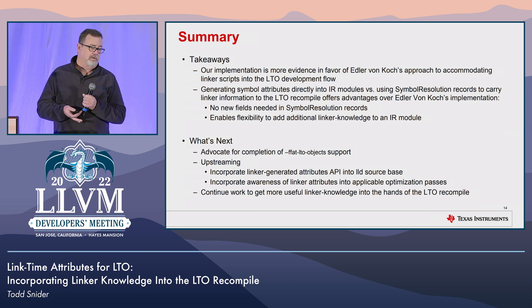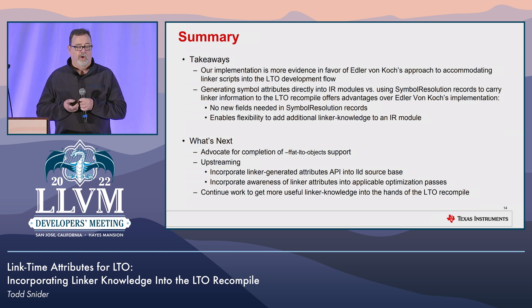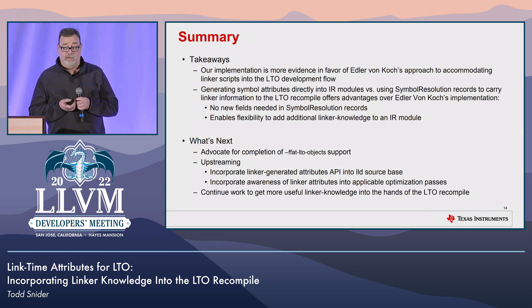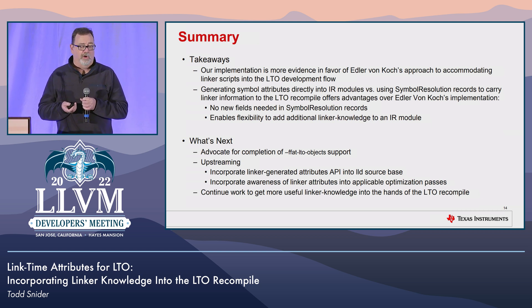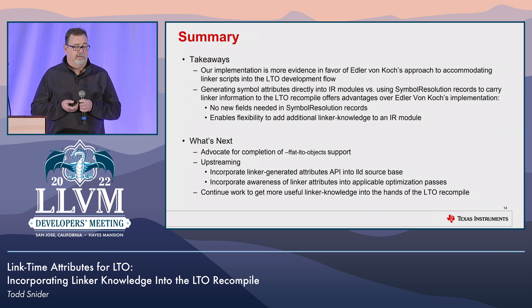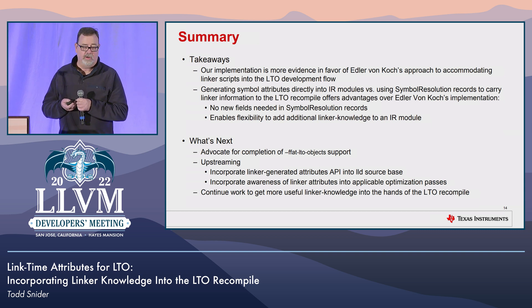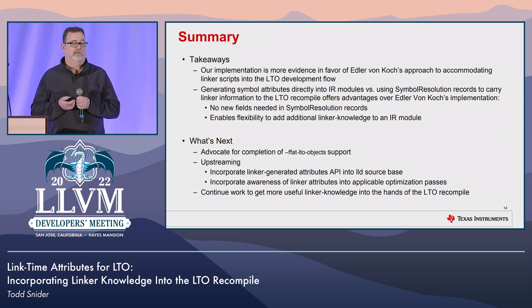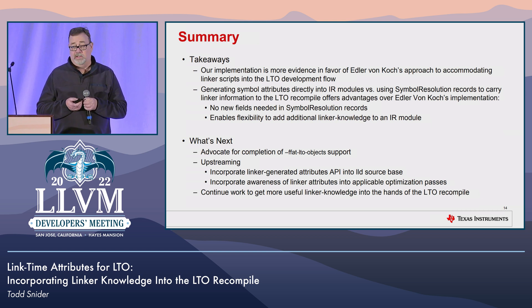The key takeaway is that our implementation provides further evidence in favor of von Koch's approach to accommodating linker scripts into the LTO development flow. We feel that generating symbol attributes directly into IR modules, versus using symbol resolution records, is advantageous. Next, we want to push forward with LTO fat object support, upstream some of our implementation into LLVM and LLD, and continue work to get more useful information into the LTO recompile.